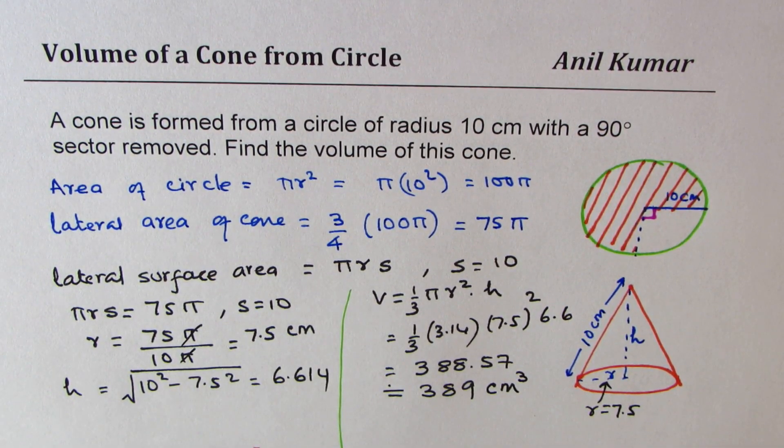So that is how you can actually find volume of a cone which has been created from a circle taking away a sector of it. So I hope the concept is clear. That kind of connects the cone with the circle. Feel free to write your comments and share your views. If you like and subscribe to my videos, that would be great. Thanks for watching and all the best.